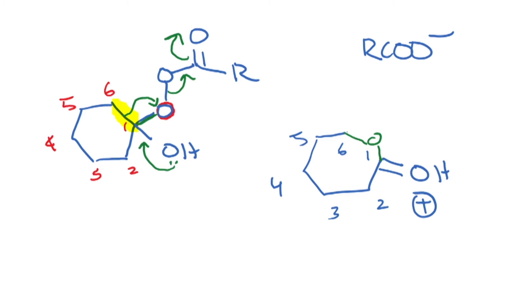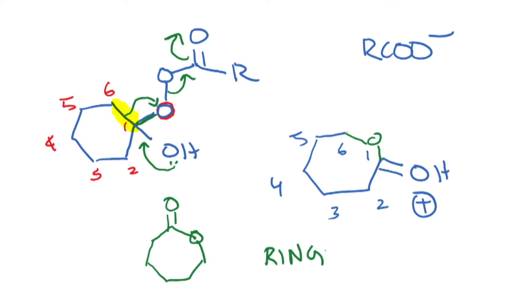Redrawing this, we get a 7-membered ring with an oxygen — the Baeyer-Villiger reaction gives ring expansion. It converts a ketone to an ester or lactone. Now we will look at the concept of migratory aptitude.